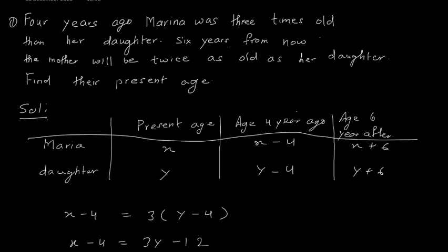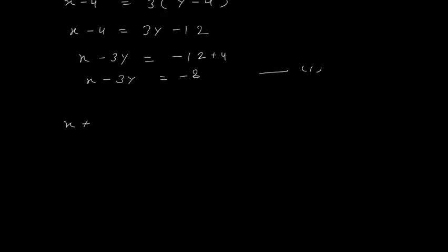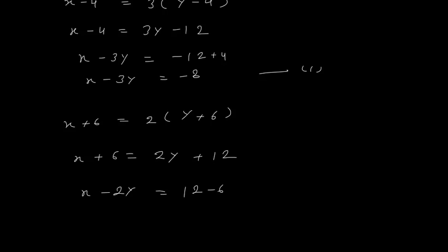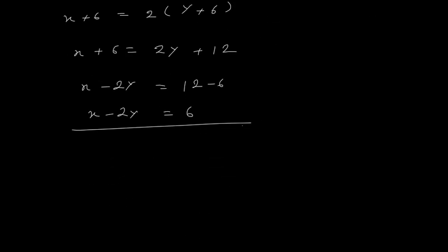Then we have one more condition: six years from now, the mother will be twice as old as her daughter. So X plus 6 equals 2(Y plus 6), which gives X plus 6 equals 2Y plus 12. That gives me X minus 2Y equals 6. This is the second equation.